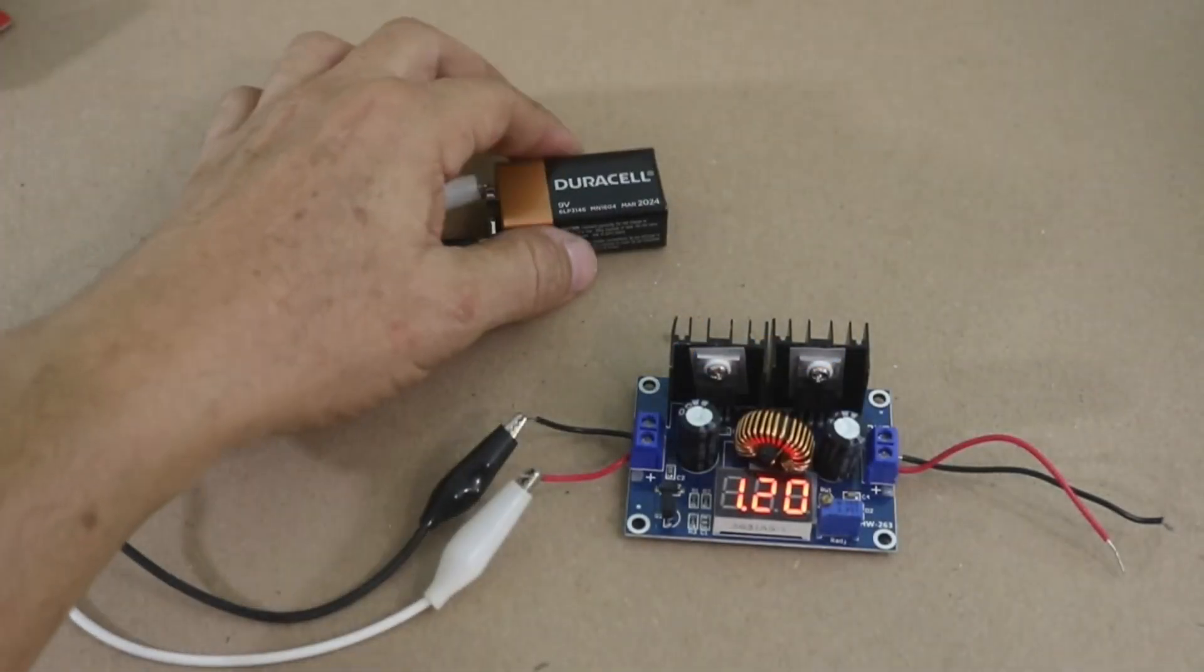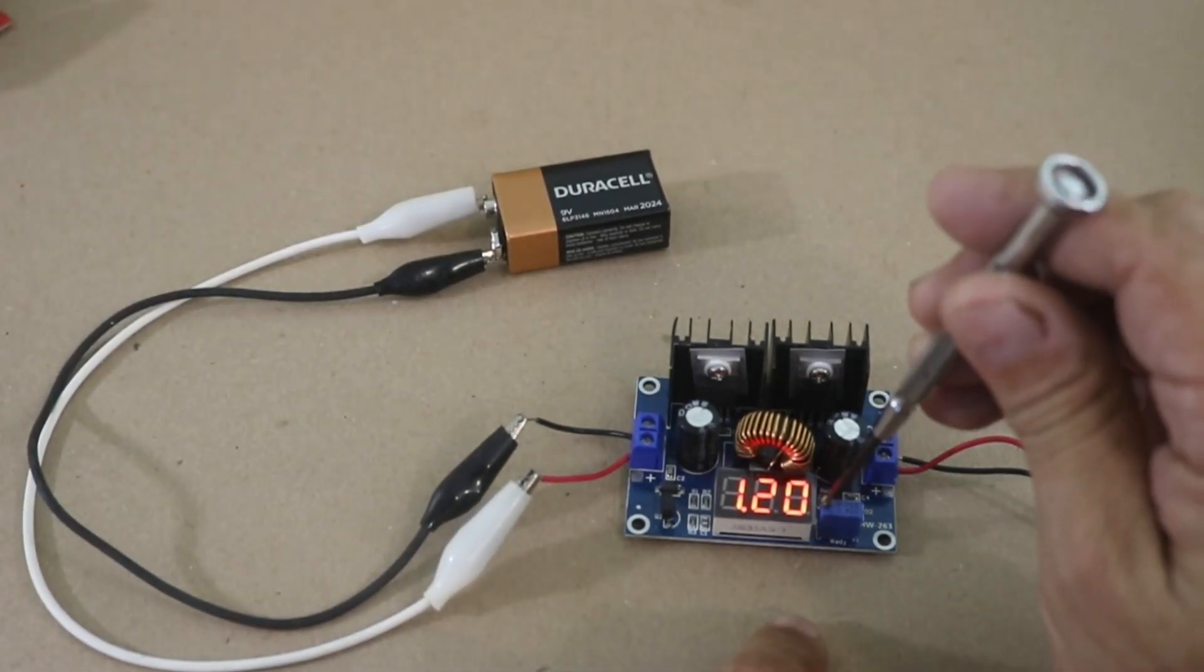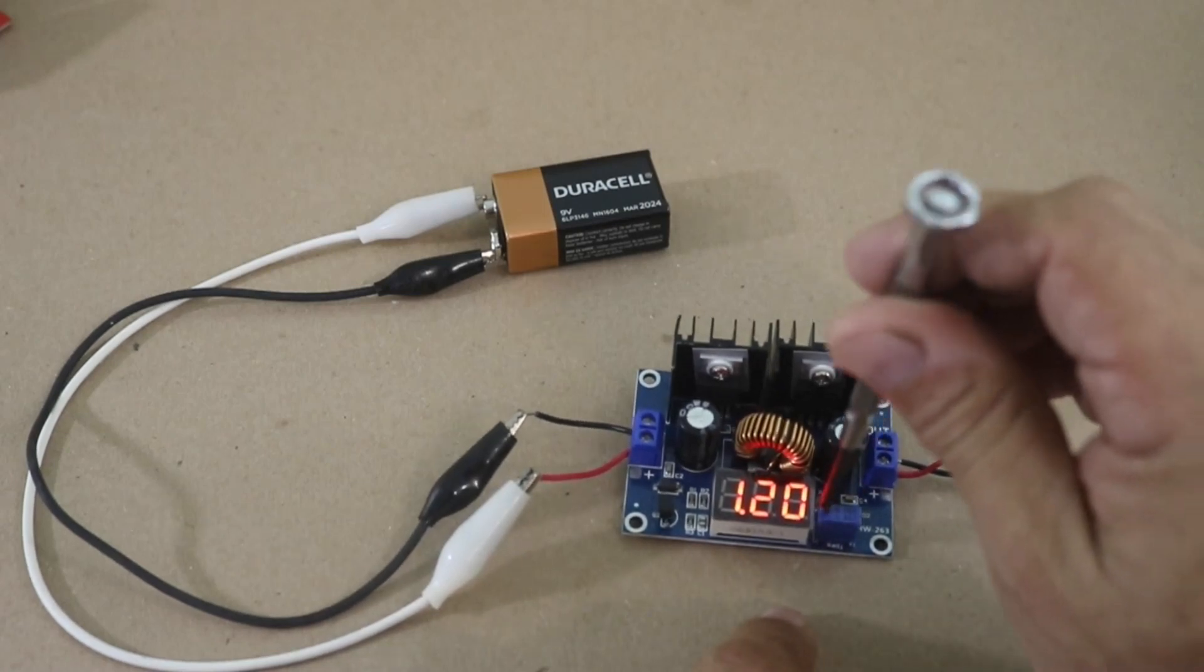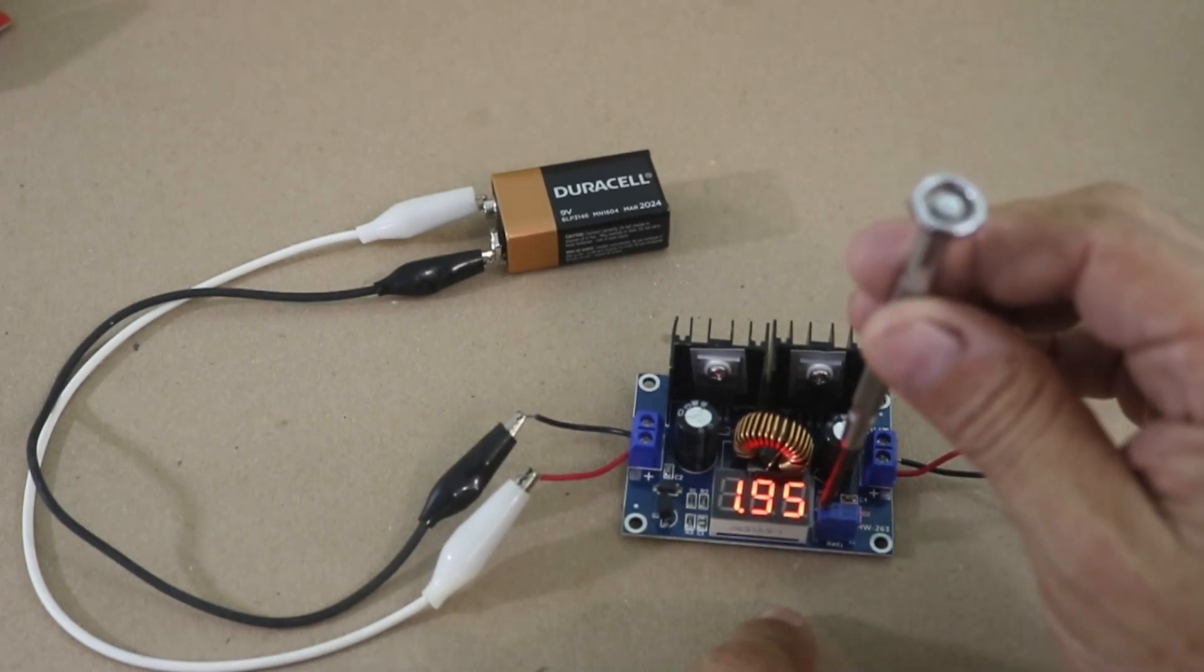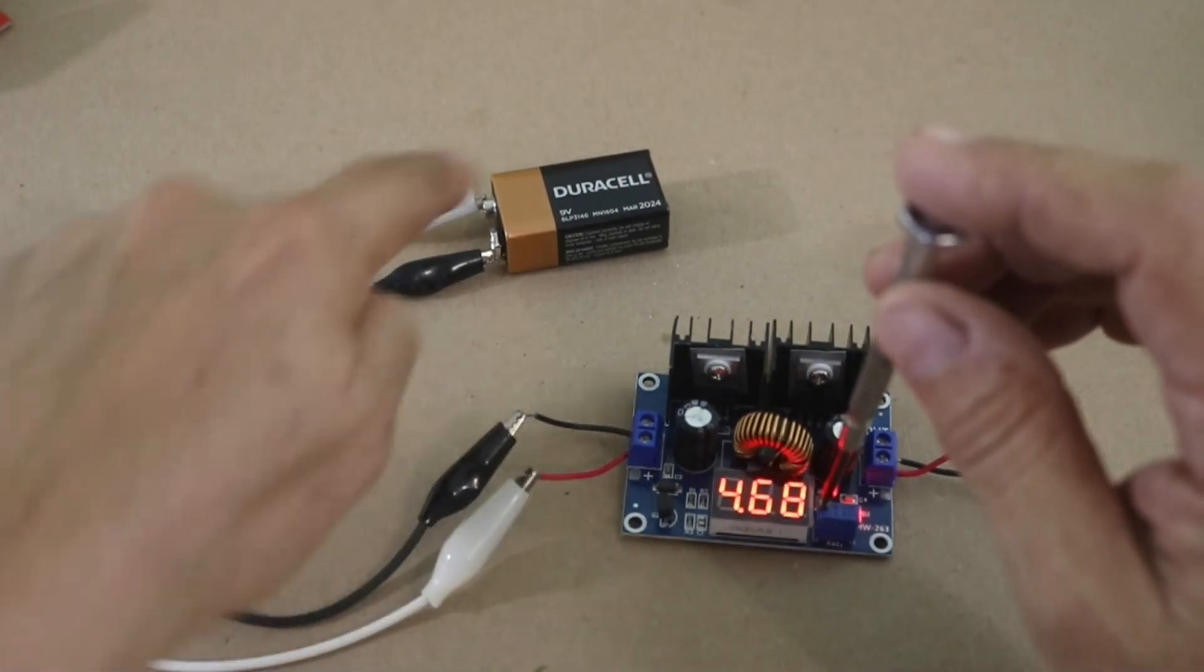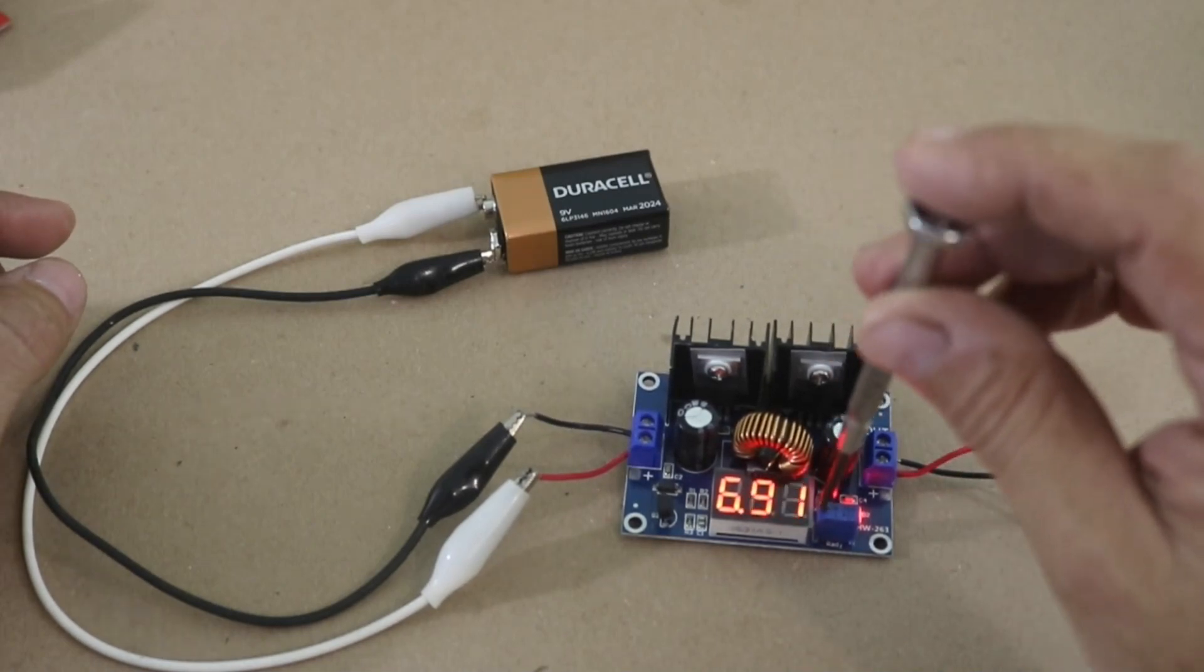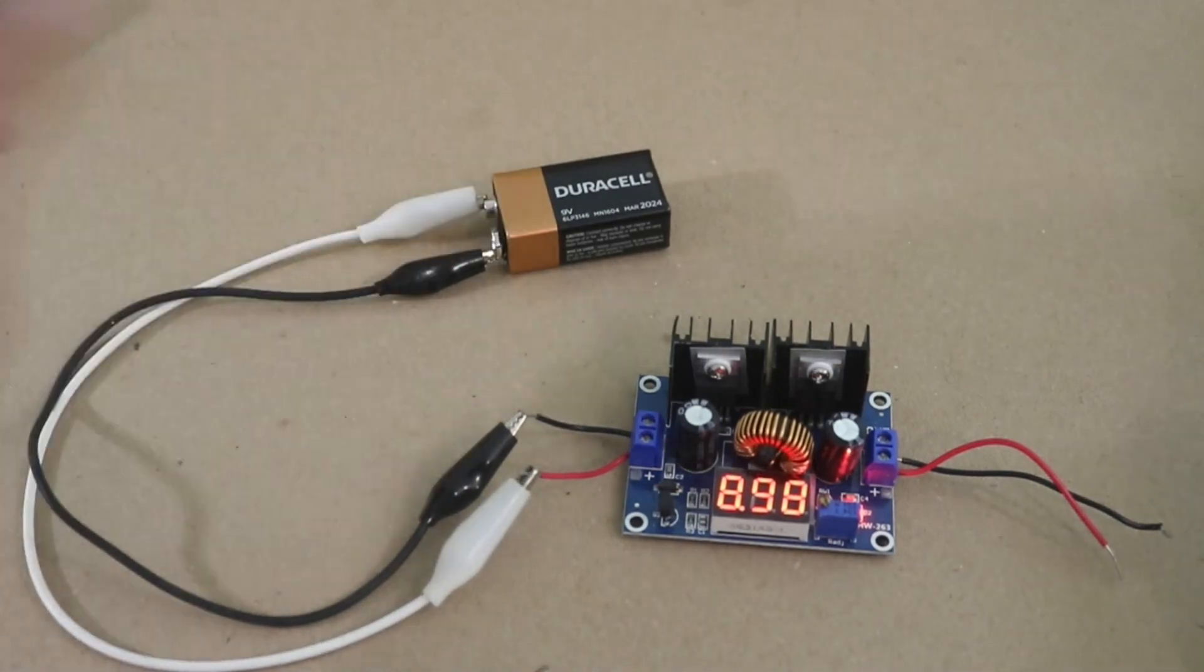Here I connected a 9V battery, and this is our minimum voltage, 1.2V, and if we move the trimpots, we can adjust the voltage. The trimpot is multi-turn, so you can adjust finely your output voltage, and the maximum voltage that you can obtain is that of your source. In this case, it will be close to 9V. Let's see. Okay, almost 9V which is the battery voltage.